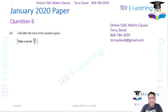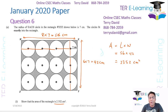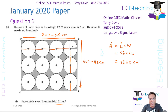The next part: calculate the area of the shaded region. You already know what the area of the rectangle is. So if you want to get the area of the shaded region, we just have to find the area of one circle and multiply by how many circles we have. In total, we have 12 circles.